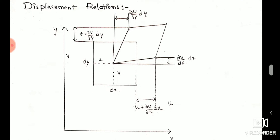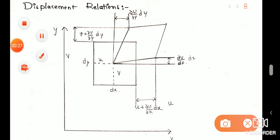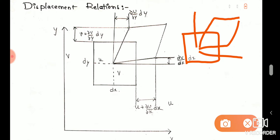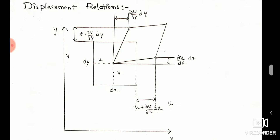Here we have a square element in x and y direction. After loading, the position is changed. It is changed in shape, and the displacement is changed in the x and y direction.